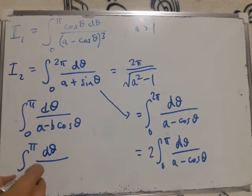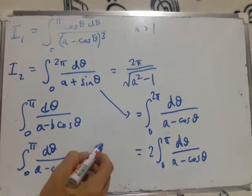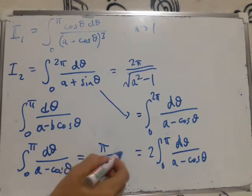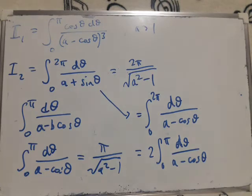Which means therefore that I'm getting very close to the integral I want. Zero to π of dθ over a minus cos θ is just half of this, so that's π over root(a² - 1).